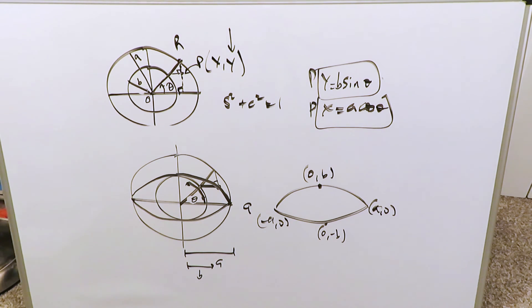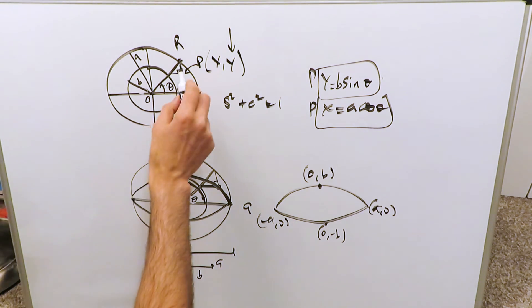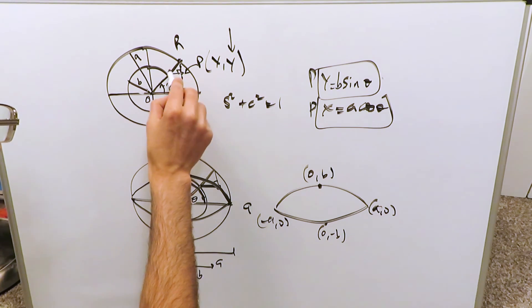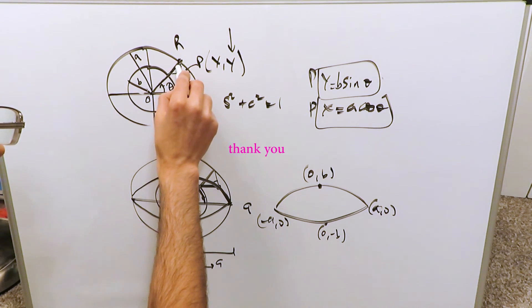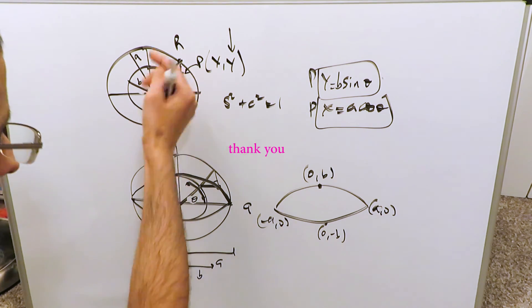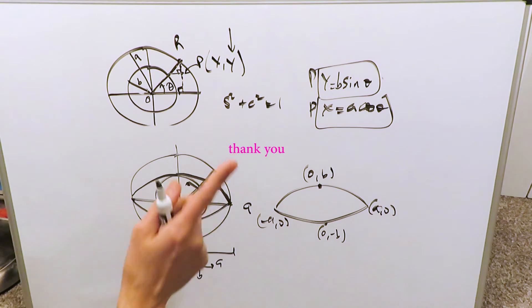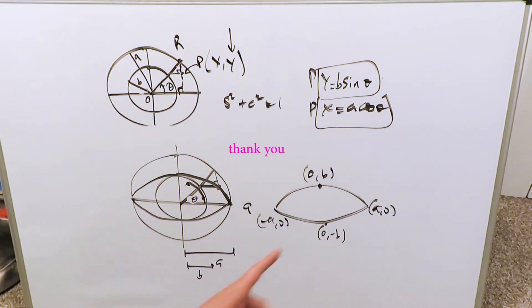And that brings our question to an end. Just remember: when you trace point p, because it's not located on the radius line but away from it, you're not tracing a circle — you're tracing an ellipse. Thank you for watching, have a good day.